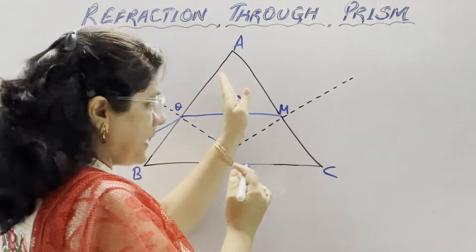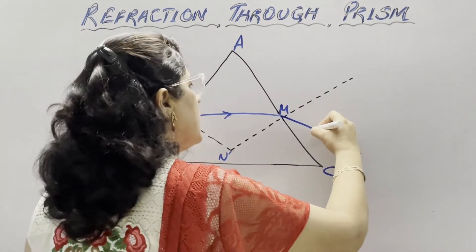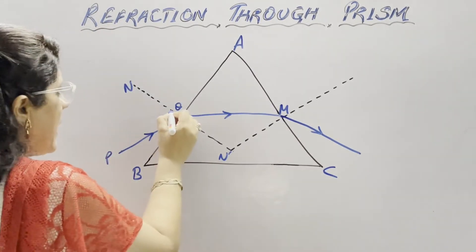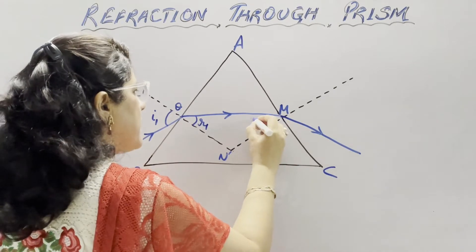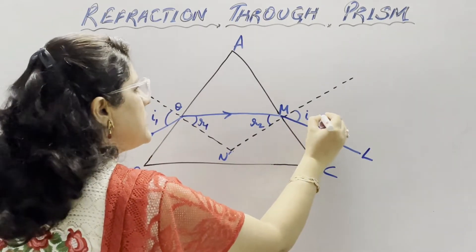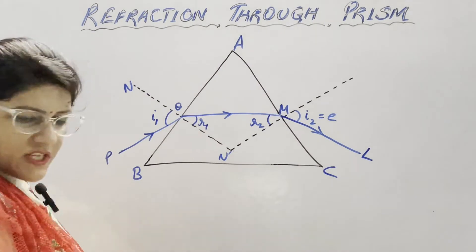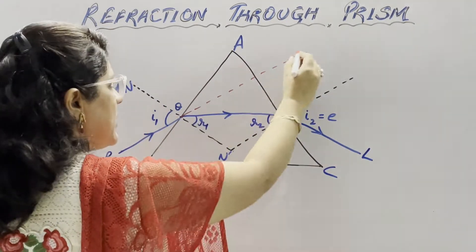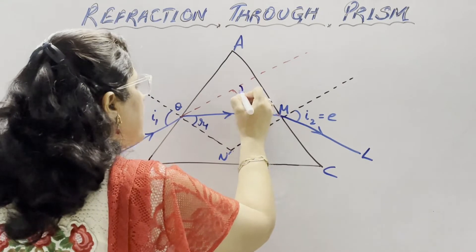This ray is coming from denser medium glass to rarer medium air. It is bending away from the normal, but this time again it will bend towards the base of the prism. In both cases, the ray will bend towards the base of the prism. The angle of incidence is i1, first refraction is R1, second surface refraction is R2. The ray comes out as emergent ray ML and this angle is i2, also written as E (emergent angle). If we produce the incident ray forward and the emergent ray backward, we get the angle of deviation, written as delta.